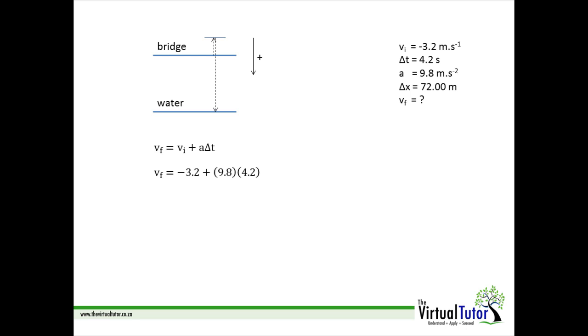Substitute the values and calculate the answer. Vf is also in the positive direction, so it is 37.96 meters per second downwards.